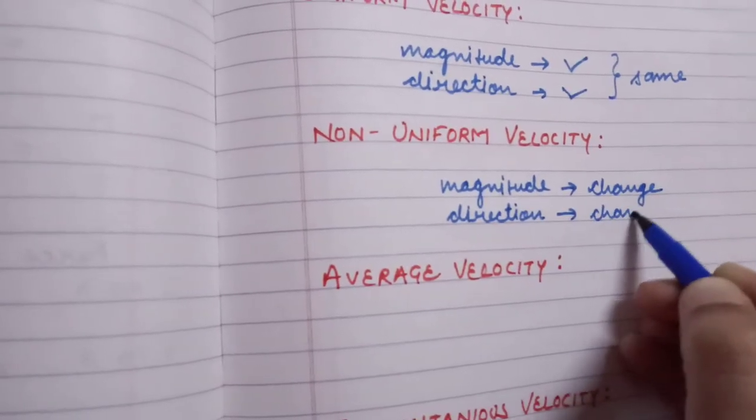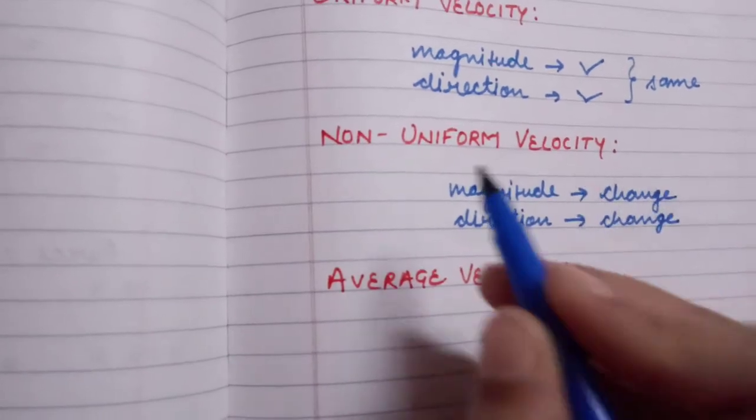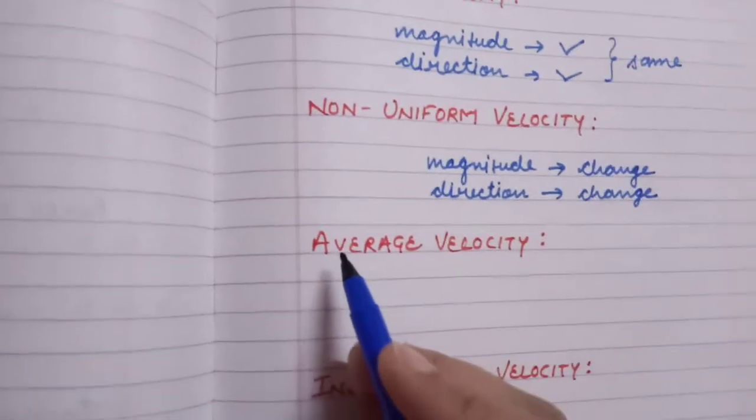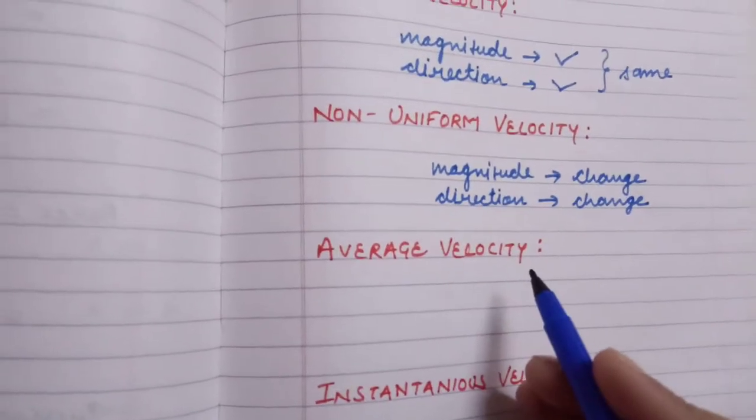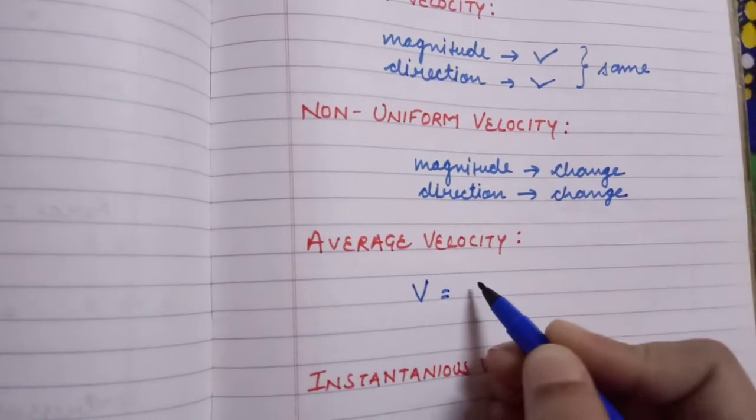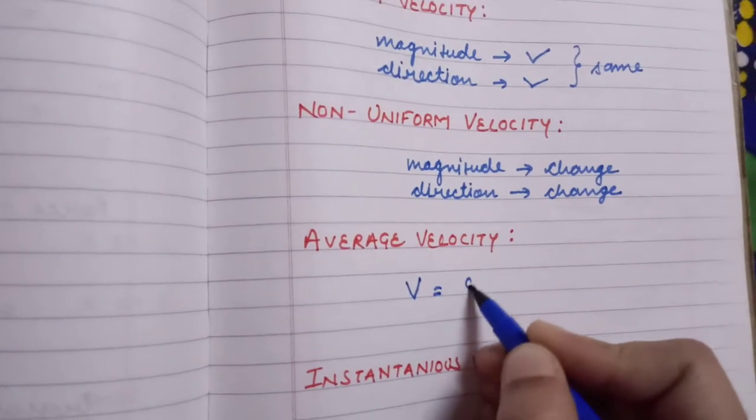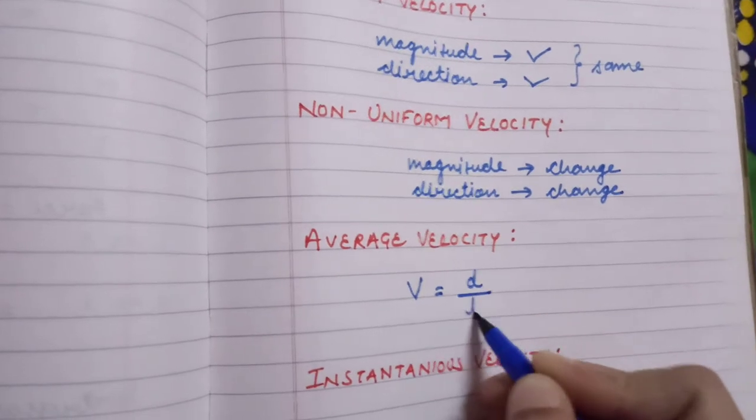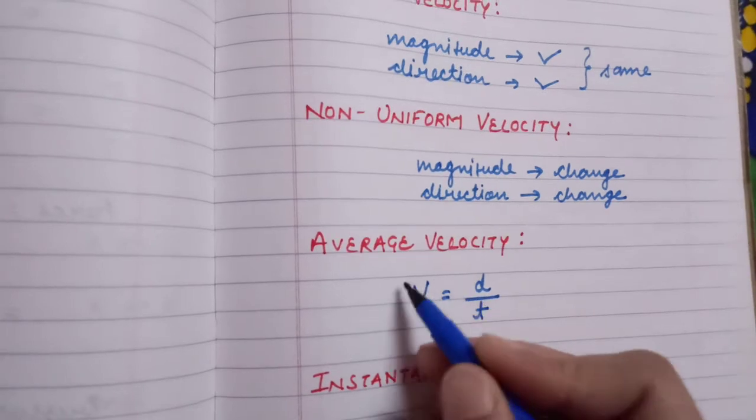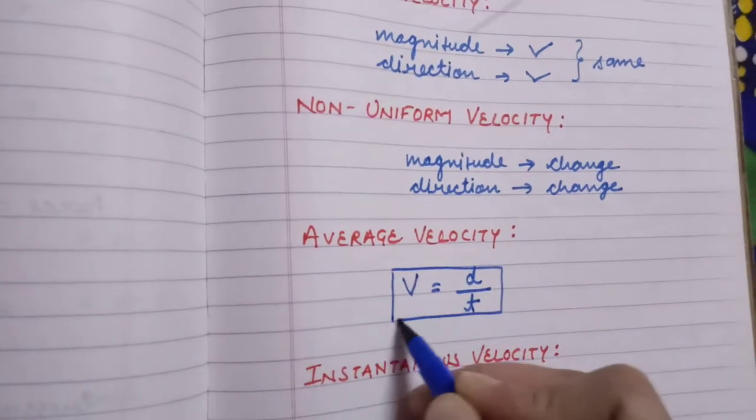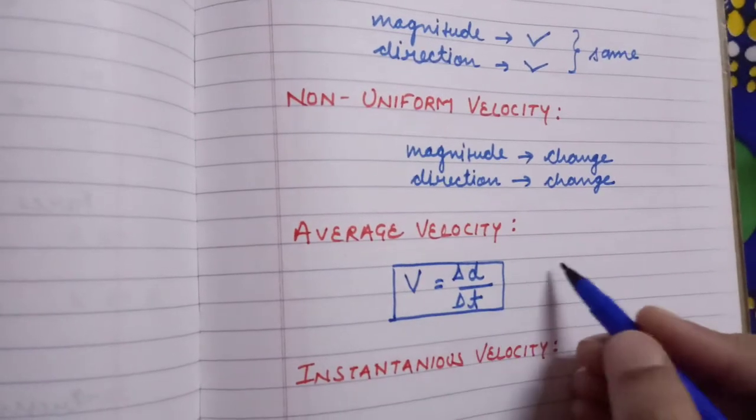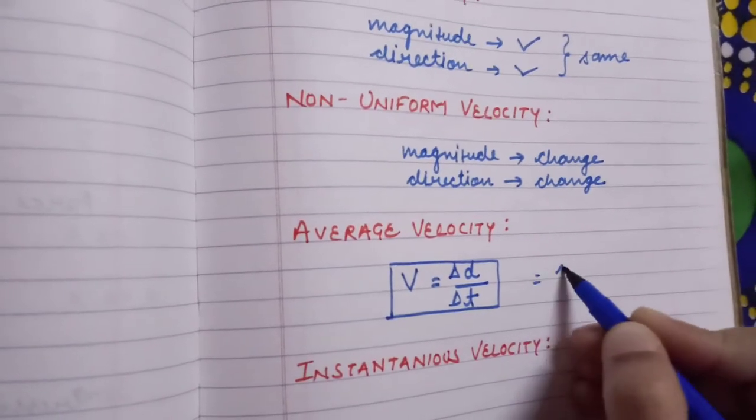Third is average velocity. It is defined as the ratio of displacement upon time. That is, average velocity is equal to displacement upon time.